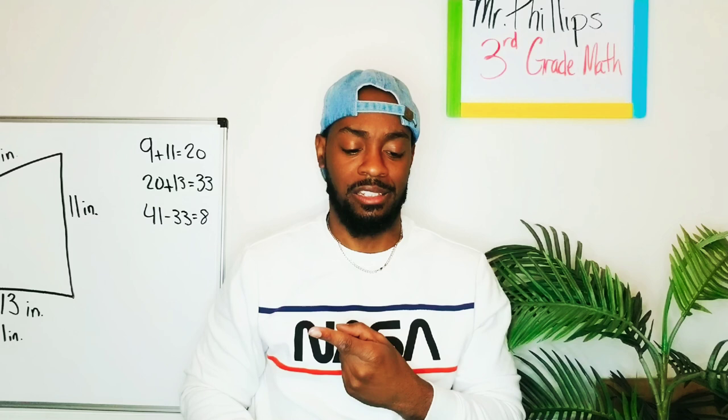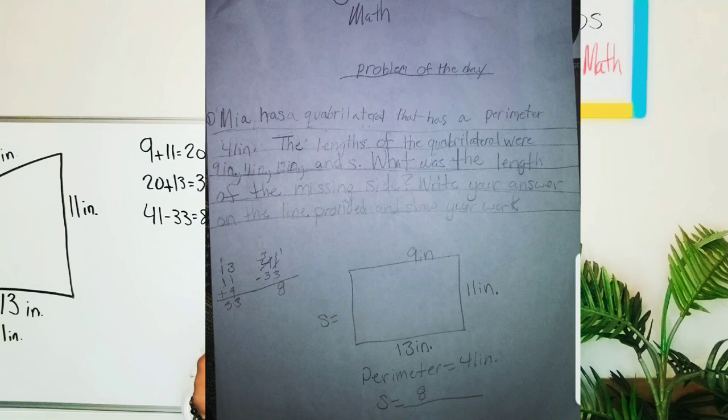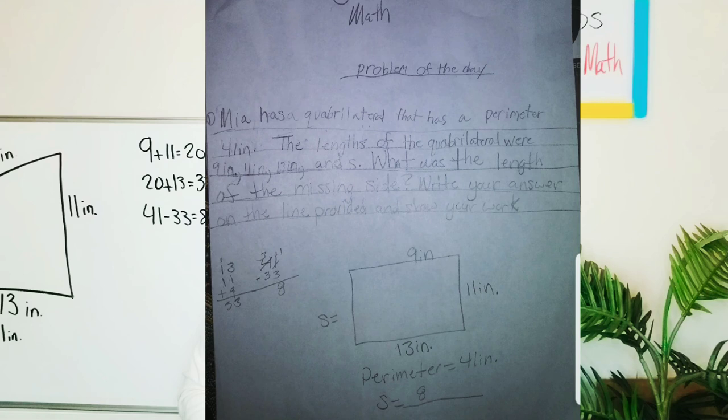Now let's look and see what our other friend, Soraya, did. So Soraya uploaded a photo. She drew out her quadrilateral and guess what? She did the same steps. She added up the sides that we knew about, took that away from the total perimeter, ended up with 8 as well.